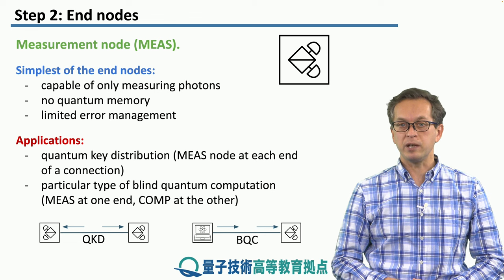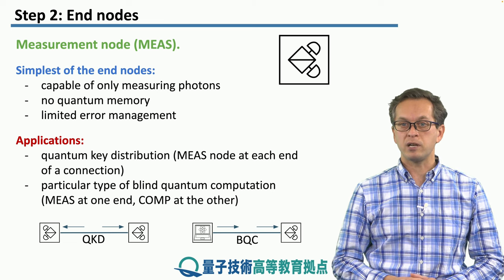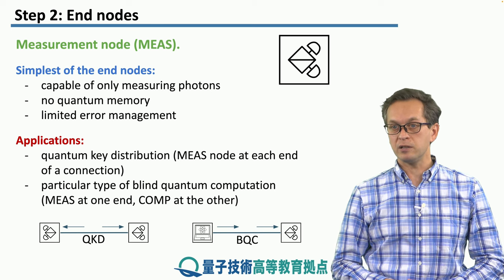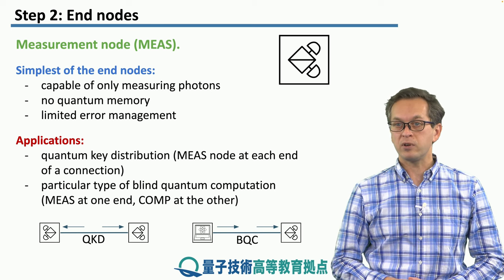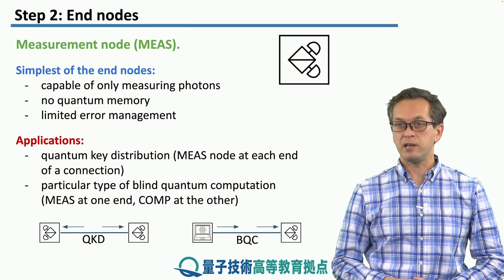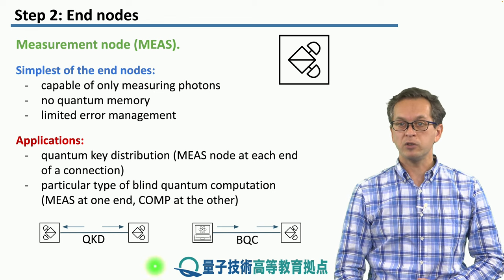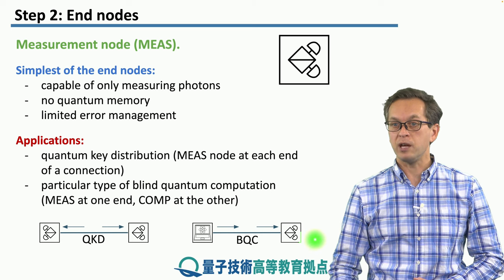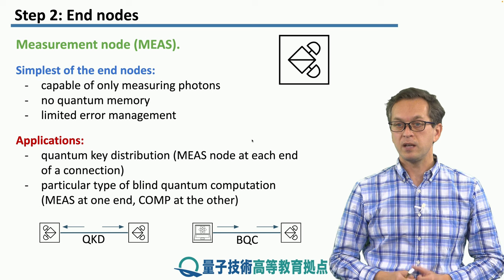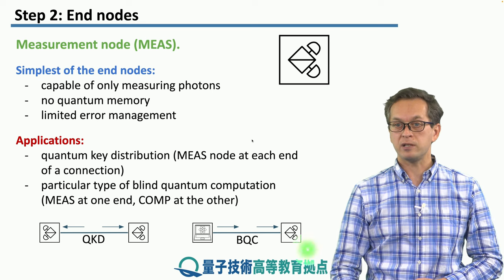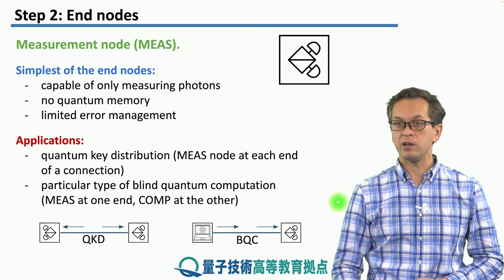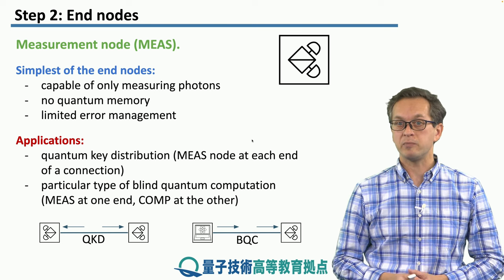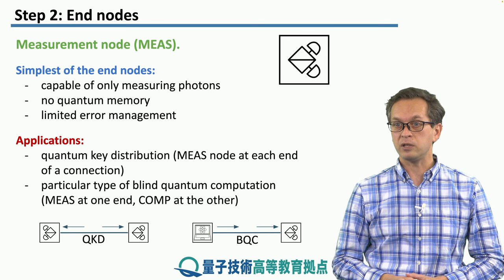Another type of application is in a very particular type of blind quantum computation. We're going to talk about BQC later in this module, but for now, just accept that it's a type of delegated quantum computation, where a quantum server or a quantum computer passes information to the end node, and the end node just measures it. This way, this client, who is here at the end node, is capable of carrying out a full-fledged universal quantum computation, despite having only this simple measurement end node in its possession.